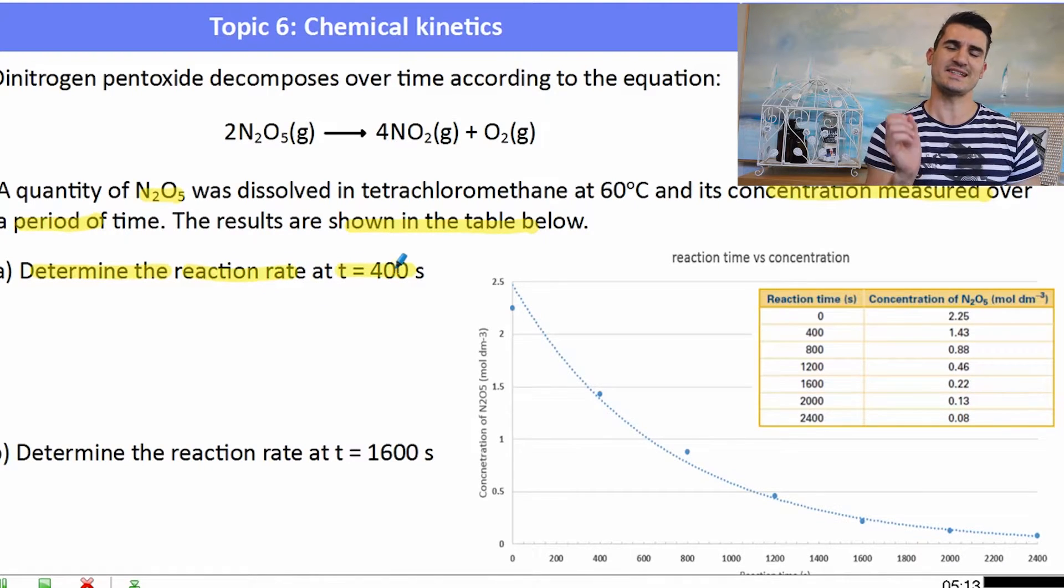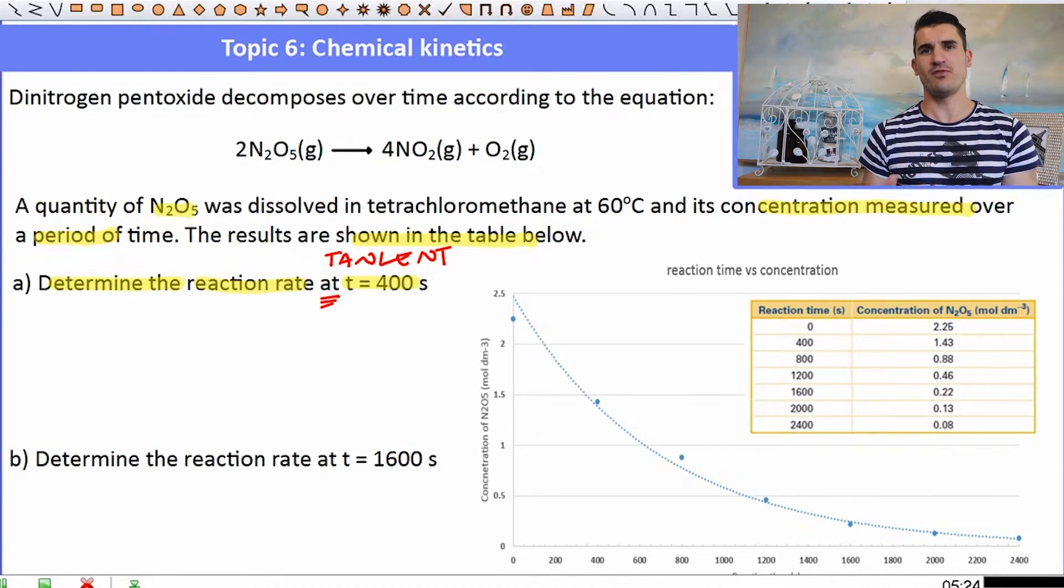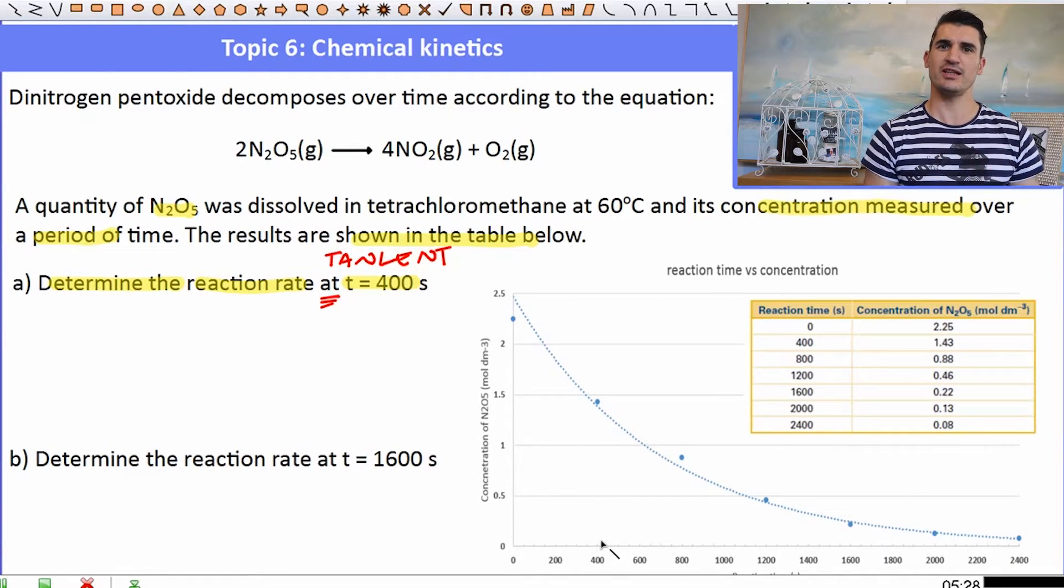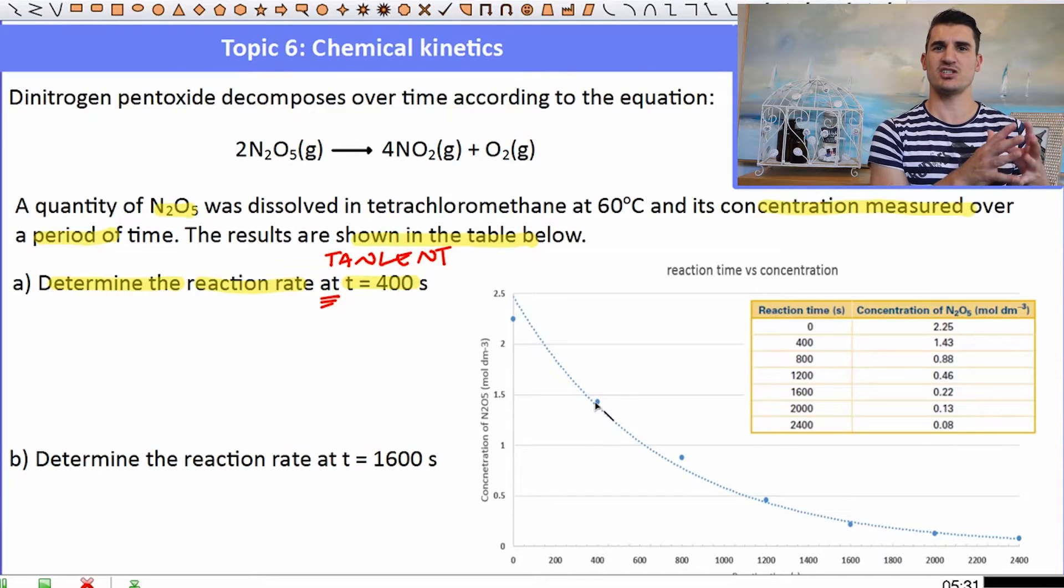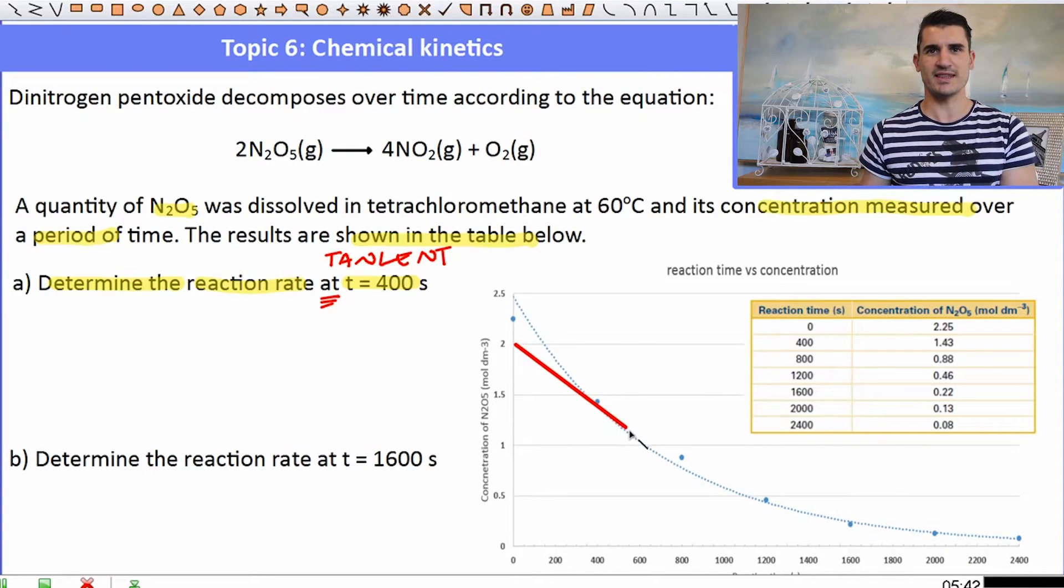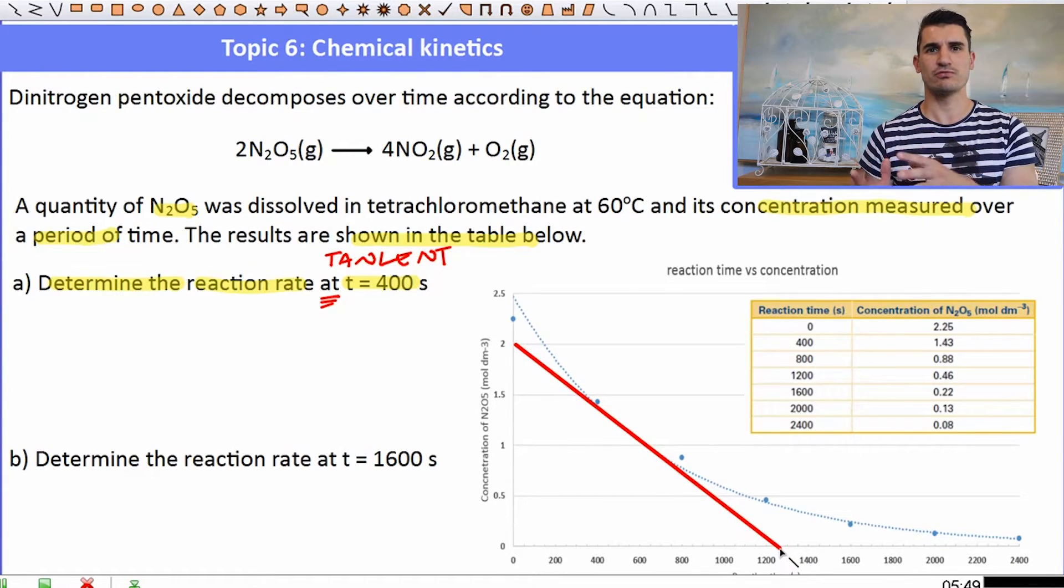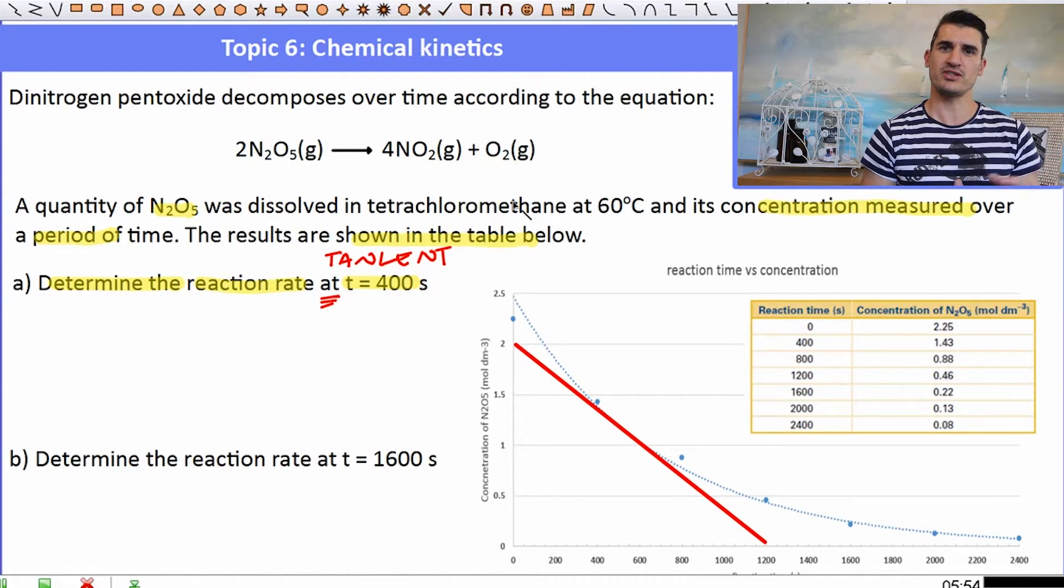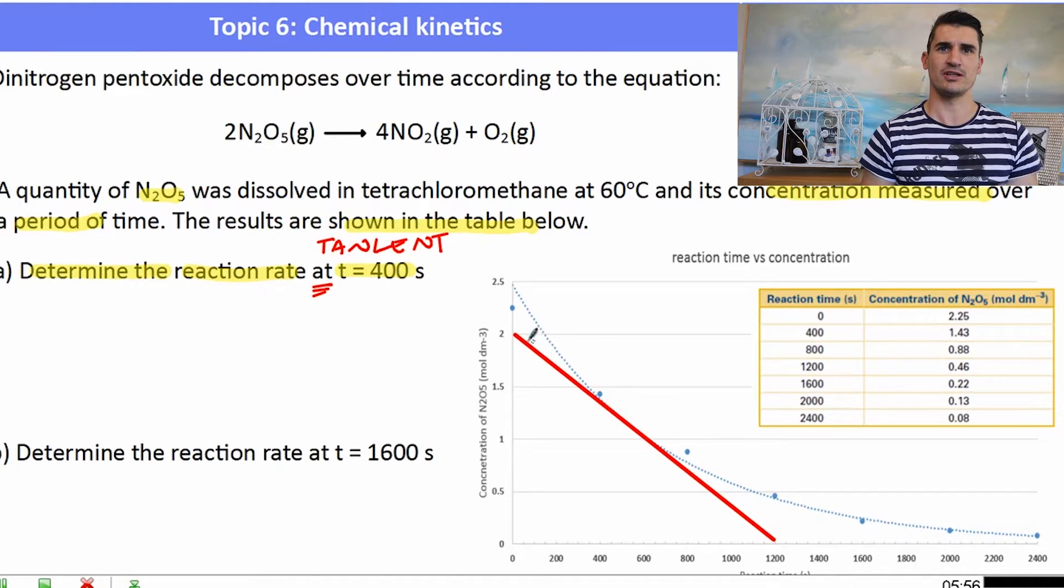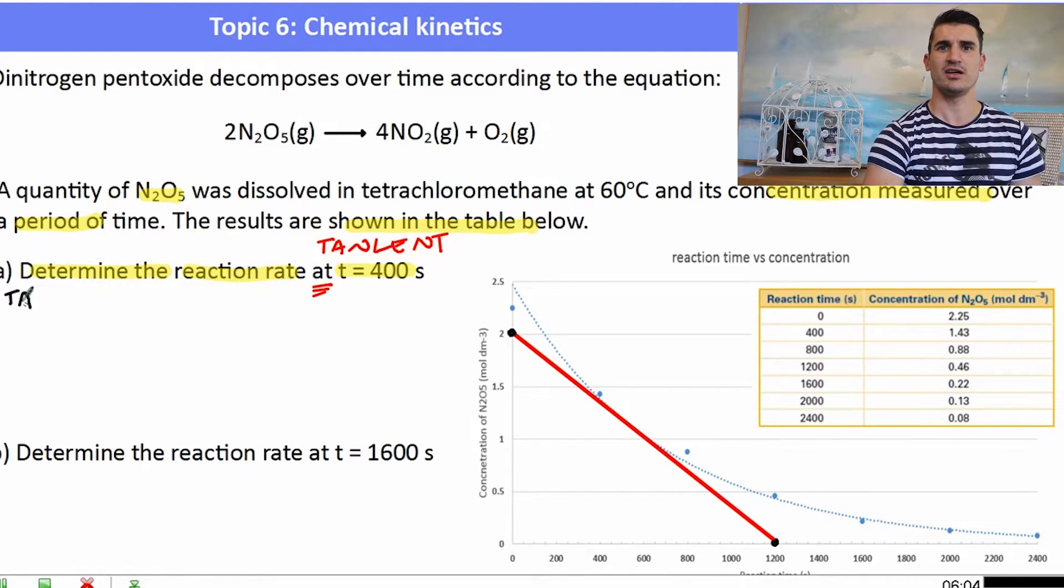So determine the reaction rate at time equals 400 seconds. Now the key word here is at. At 400 seconds means they want you to draw a tangent at that point on the curve. So what we need to do here is get our ruler, find the location of the point at 400, and draw a really good tangent at that point. Now my tangent, I'm going to try as best as I can. You'll probably be able to do a better job if you've got a bit of paper, but I've tried the best I can here. The easiest way to do the tangent is to extrapolate that tangent line to both the x and the y axes. And then when we're asked to determine the rate, the rate is just the gradient of that line. And if we use the points on the axes, we can usually do it a little bit more accurately than picking two points on the line.